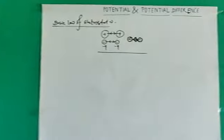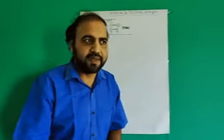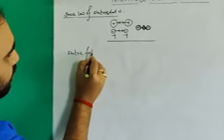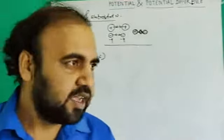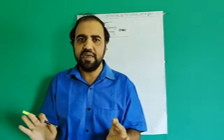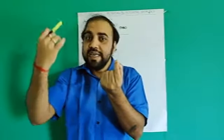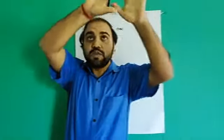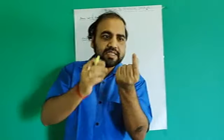Now we will start something new — electric field. Electric field is actually denoted by the term E. What is electric field? If we hold a positive charge or a negative charge — whatever it is — then around this charge there is a space. Within that space, if we bring a second charge, then this second charge will attract or repel by the first one. That space around a charge is the electric field.